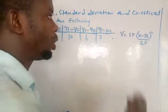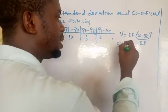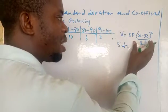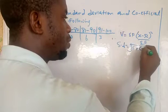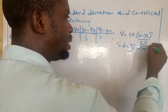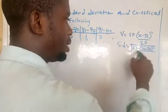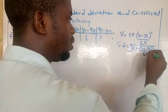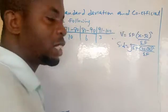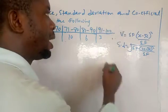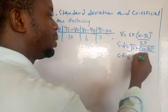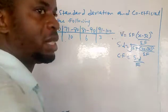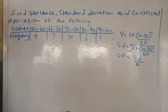You don't need to start all over. If you are asked to find standard deviation, immediately you get your variance, just find the square root — it is summation of f(x minus mean) squared over summation of f, then square-rooted. And for the coefficient of variation, that is going to be standard deviation over the arithmetic mean. That is the formula we are going to use.